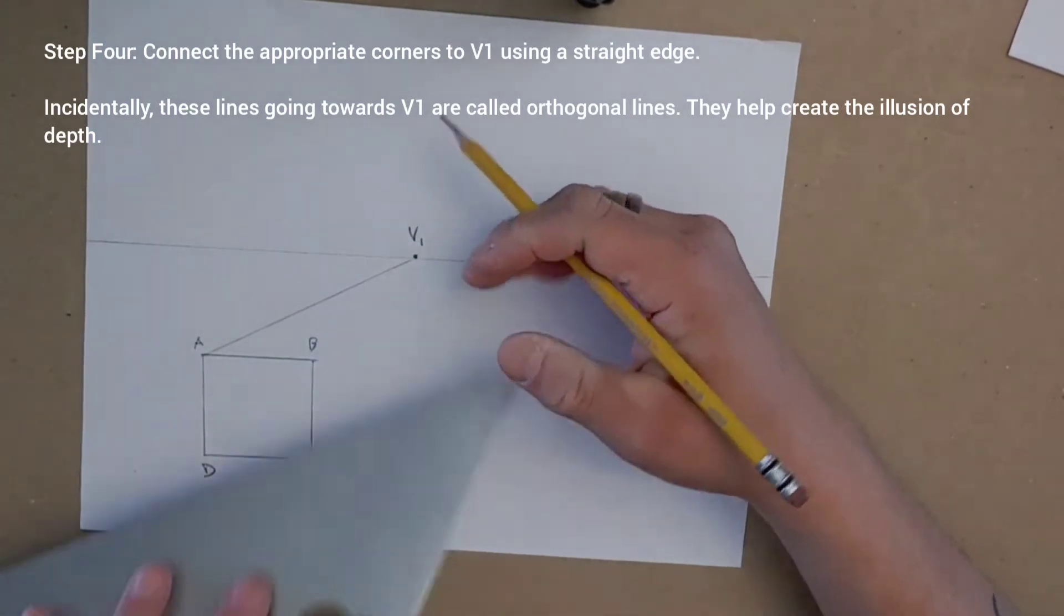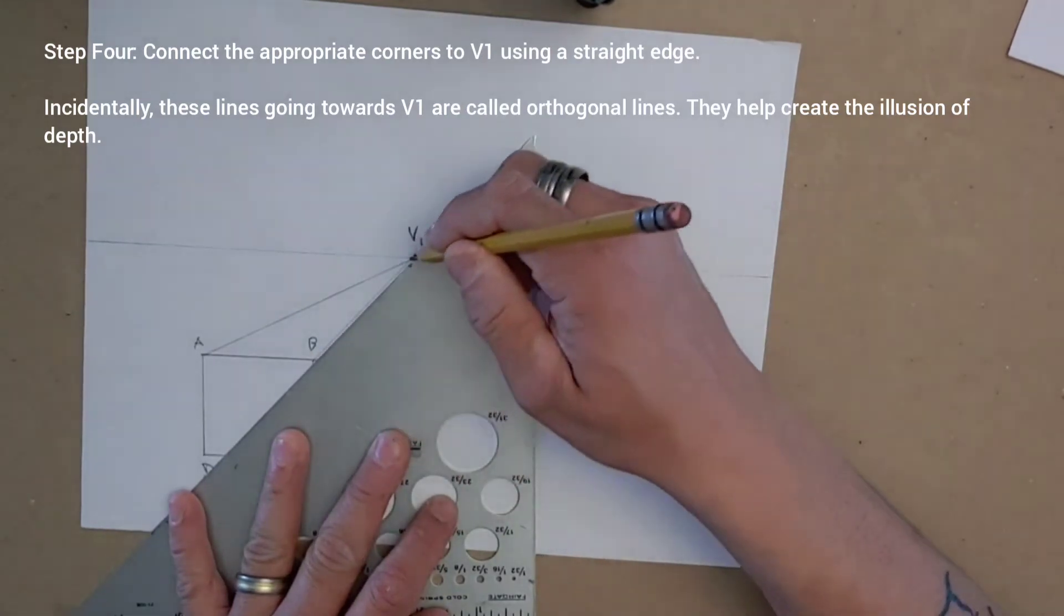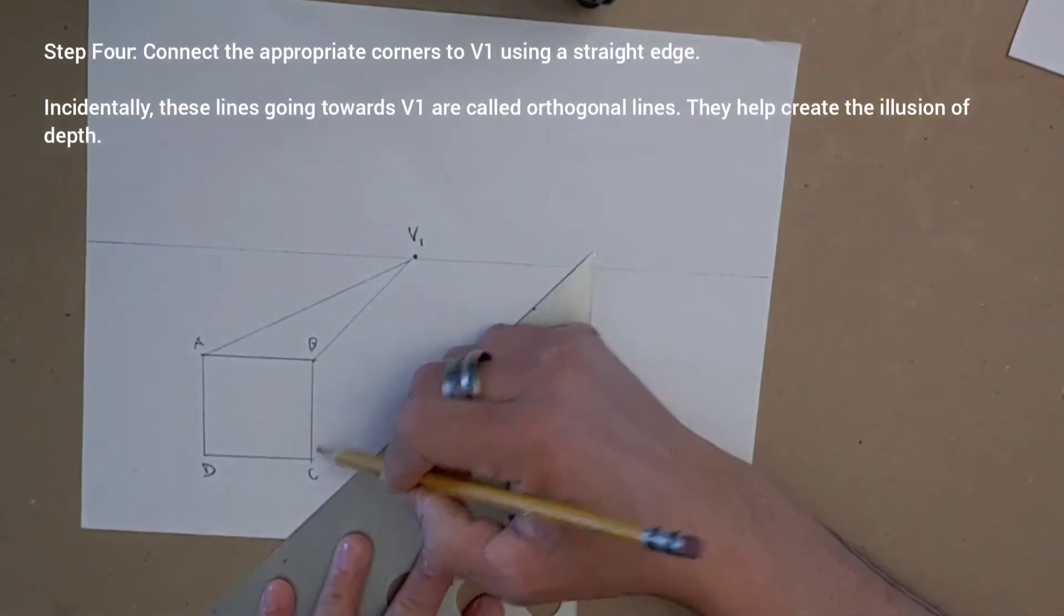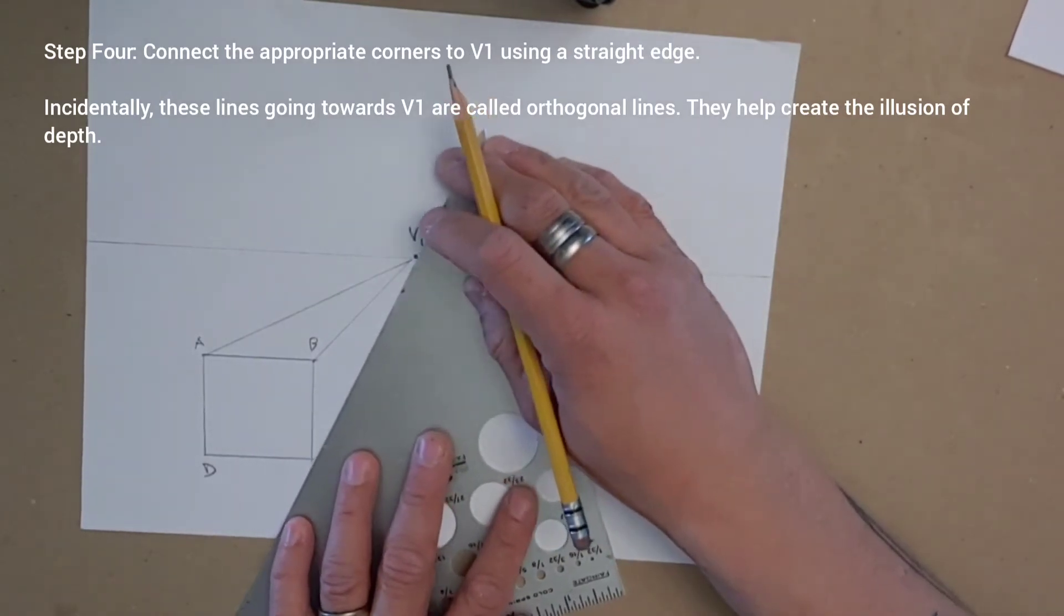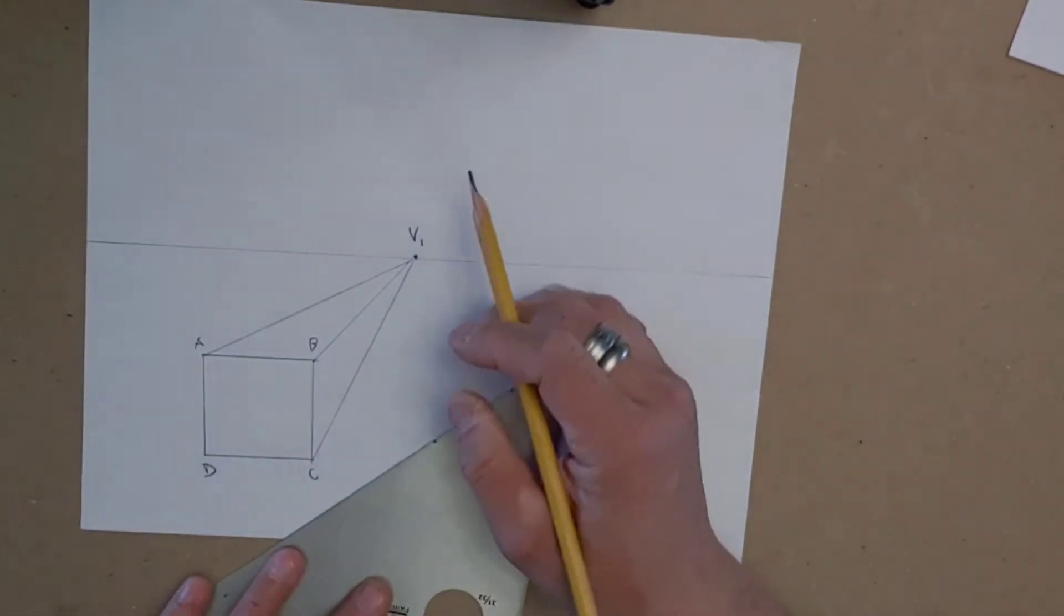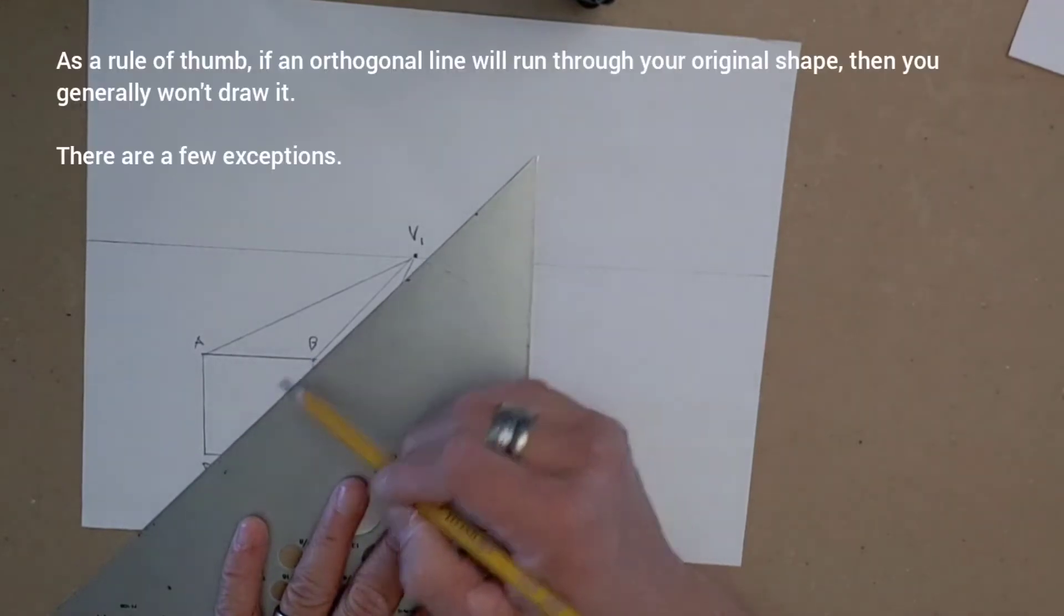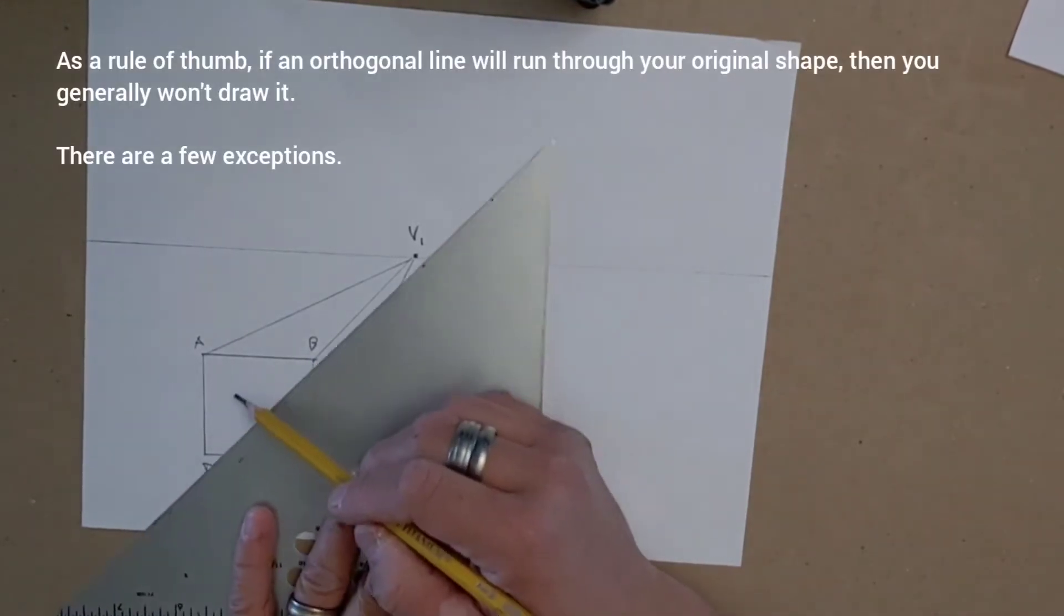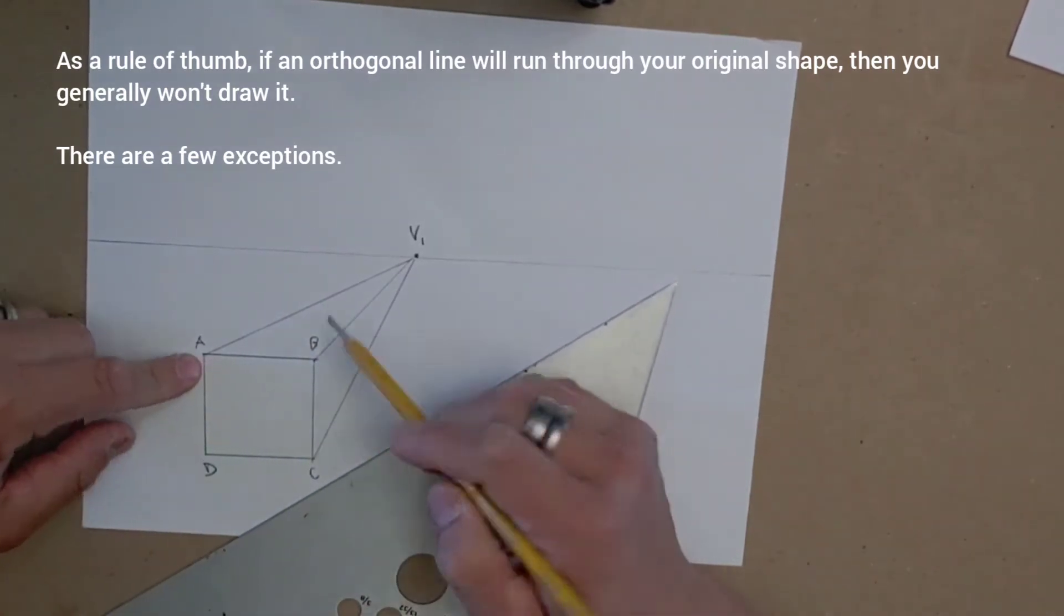Nothing blocking the path from B to V1 either, so I'm going to draw that line as well. Nothing blocking the path from C to V1. So I'll line the two up so they line up on the edge of my ruler, and I'll connect that one. If I go from D to V1, if I were to connect D to V1, the problem is the line I would draw would go through my shape, and so that's not going to help me out at all, so I'm just going to leave it as is. So A, B, and C go to V1.